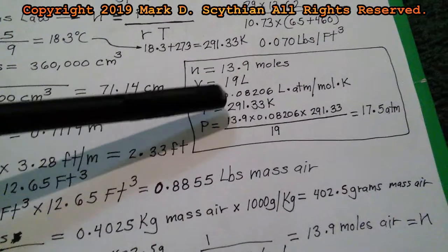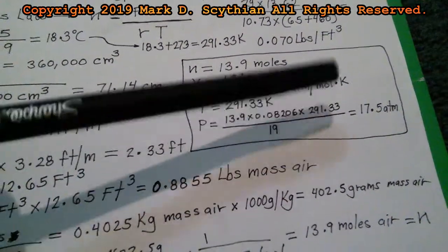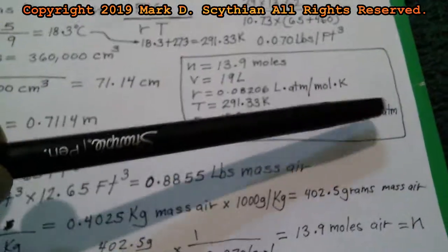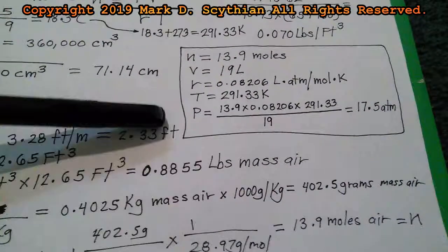We put all these values in, 13.9 moles times the constant R times the absolute temperature divided by liters volume, 17.5 ATM absolute pressure. That is the gauge plus the atmospheric pressure.